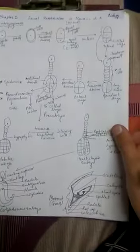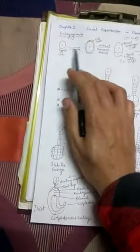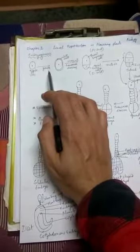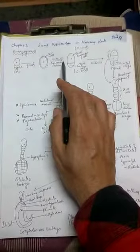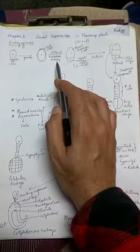Embryogenesis is the process of formation of an embryo from the zygote, and nourishment is provided by the endosperm throughout. The zygote is present towards the micropylar end; it grows in size, being a diploid structure, develops a cell wall around it, and then undergoes an unequal transverse division — meaning the nucleus is equally divided but the cytoplasm is unequally divided.